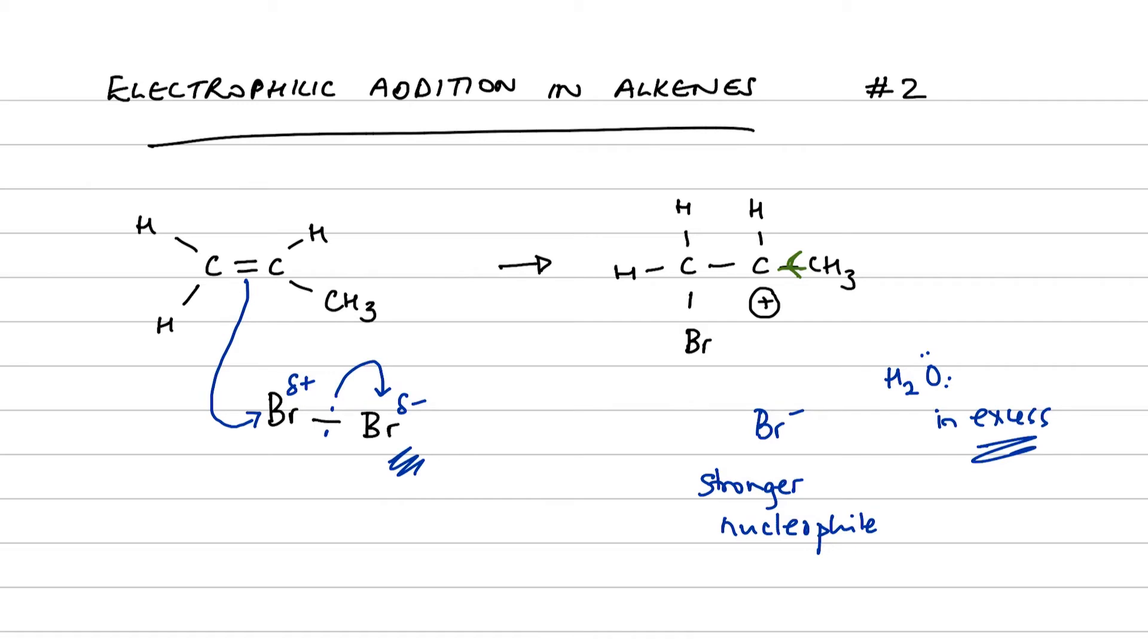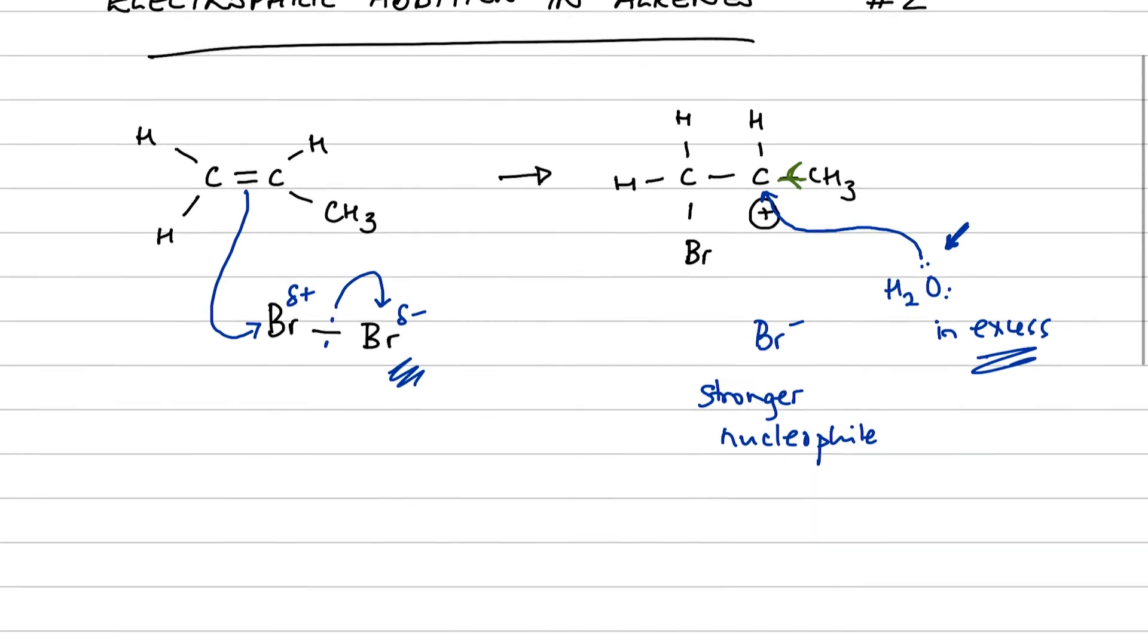So the likelihood is that it is water that is going to attack that positively charged carbon atom, not the bromide. So let's see what that looks like. We've got lone pair of electrons. Note I'm being very careful with my curly arrow. It's going from the lone pair, not from water in general or from the oxygen, from the lone pair to the positively charged carbon.